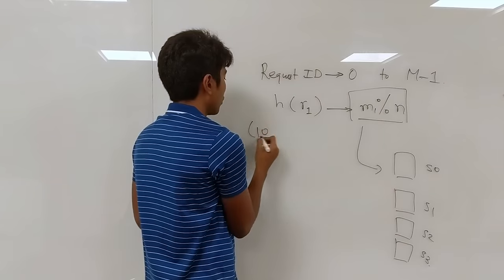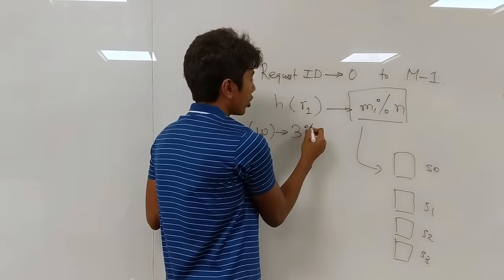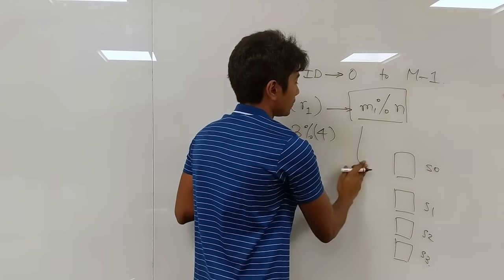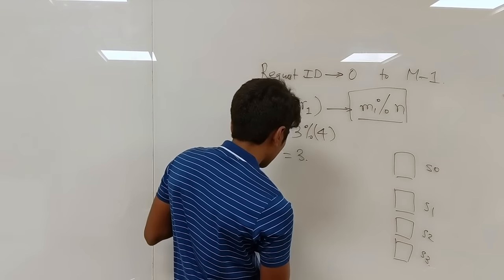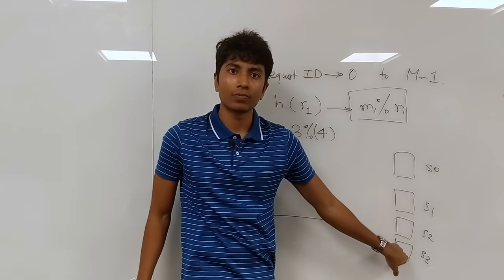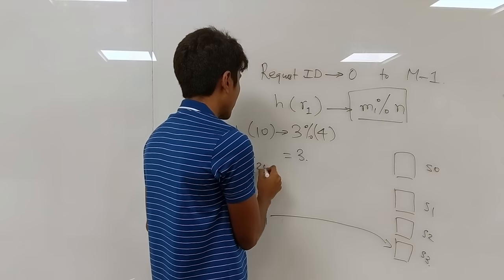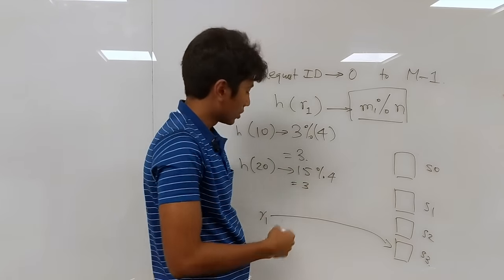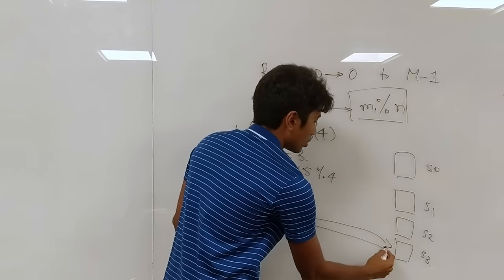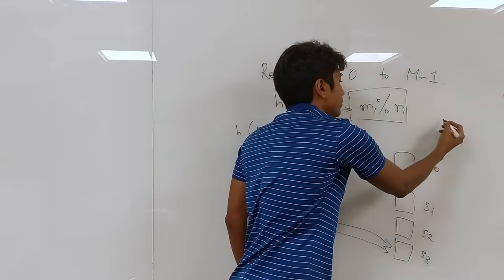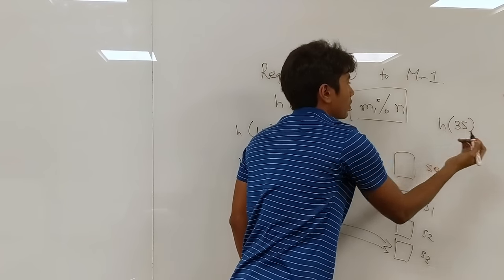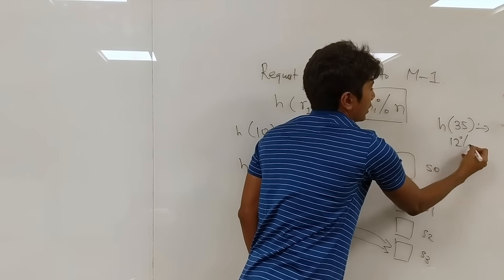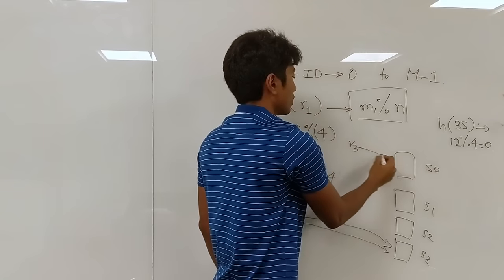R1 is 10. When you pass it through your hash function, you get the value 3, 3 mod 4, N is 4 in our case is 3. So this will go to bucket number, this request R1 will go to the server 3. Another example, h of 20. Let's say this somehow gives you 15 and mod 4 again, this gives you 3. So R2 also goes to 3. And finally, if we have h of 35, when hashed gives you 12. This mod 4 gives you 0, so R3 maps to the first server.